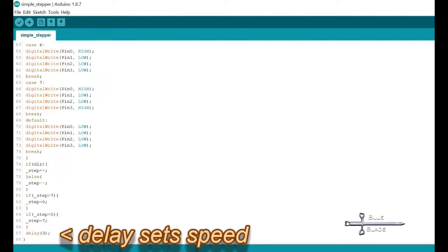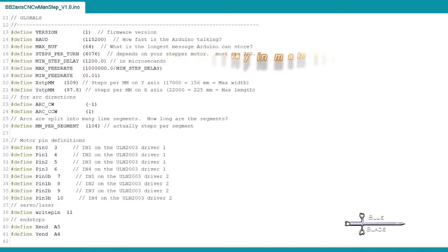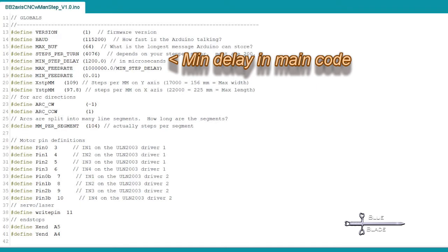Note there's an upper limit on how fast it can move. If the delay is too small, it skips steps, which appears like it's moving slower, or it stops moving at all and just hums. Playing with this, I was able to determine that my motors moved fastest with a 1.2 millisecond delay. We'll use this later to set the max speed.